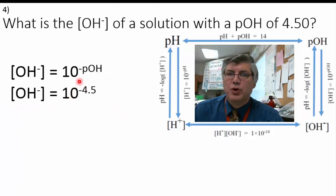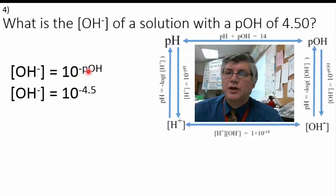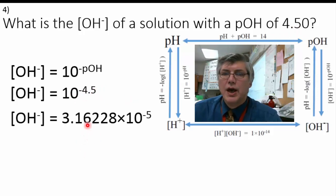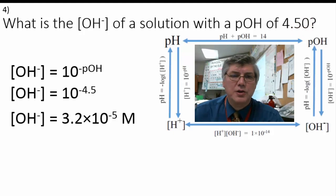We plug it in — doing the same thing we did with pH but for pOH to find hydroxide. 10 to the negative of the pOH, so 10 to the negative 4.5. We get a long number which we round to two significant figures: 3.2 times 10 to the negative 5, because we have two significant figures in our given. So the hydroxide ion concentration is 3.2 times 10 to the negative 5 molar.